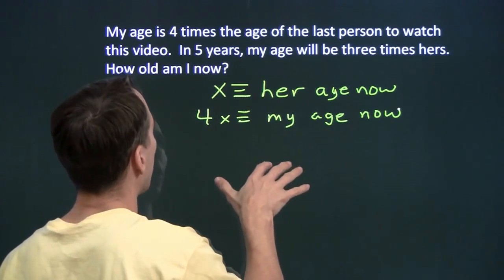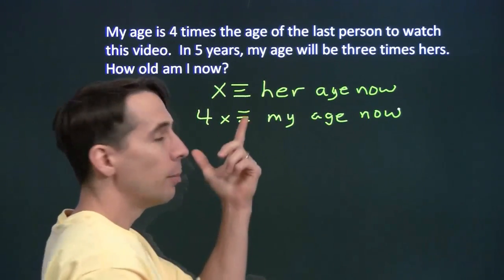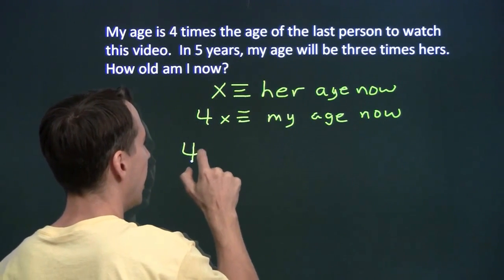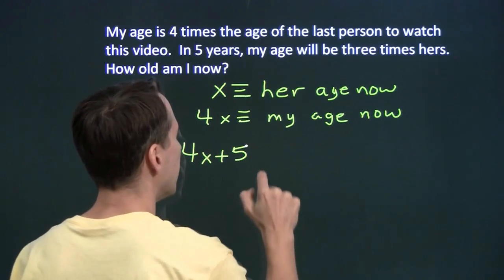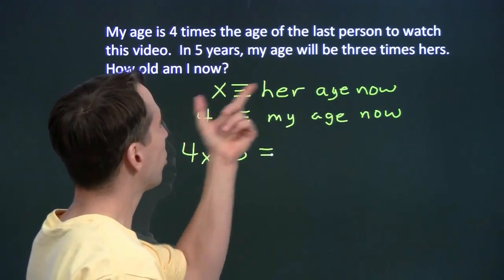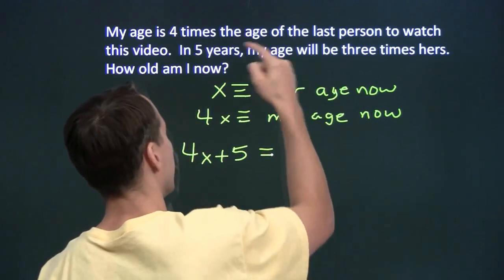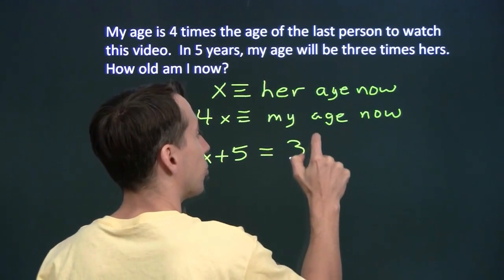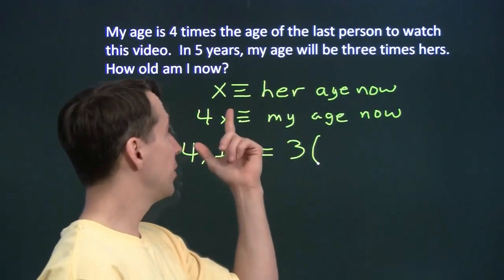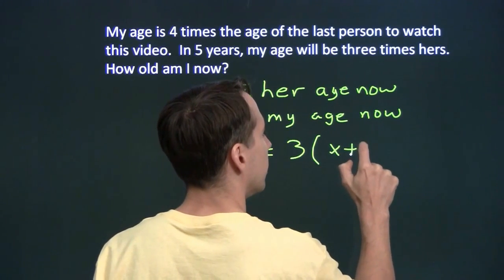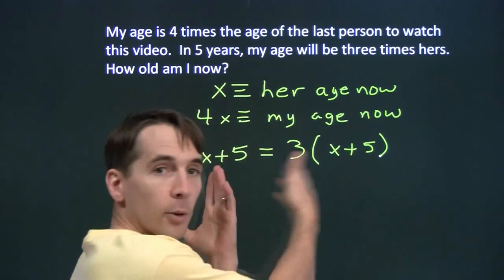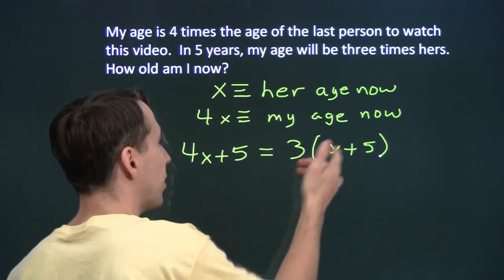So now let's try to set up an equation. In five years, my age is going to be 4x plus 5. So I'll just be five years older than 4x. And we know that that's going to be equal to three times her age in five years. So three times her age in five years is x plus the five years that have gone by. And there we go. We have an equation, and we know how to tackle this.